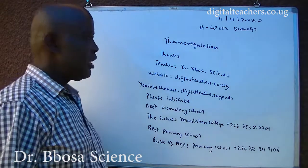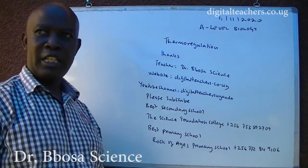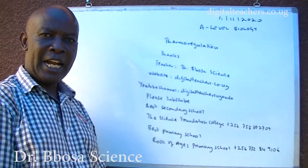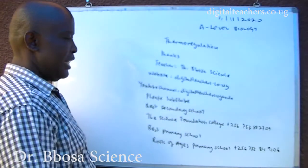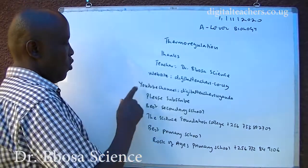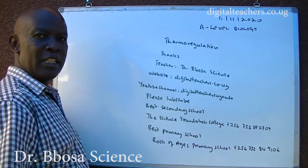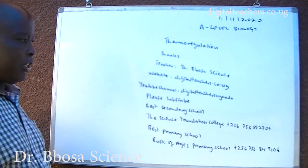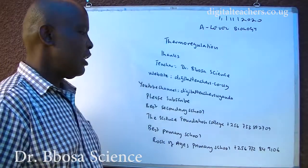Thank you very much for listening to this video. Your teacher has been Dr. Bosa Sayas. Website: www.digitalteachers.co.ug — here you find notes, exams and marking guides for physics, chemistry, biology and math from primary 7 to A-level. YouTube channel: www.digitalteachers.uganda. Type digital teachers Uganda and enter; you will be given categories of videos. Please subscribe to promote my videos — subscription is free.